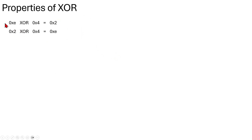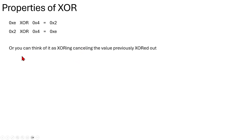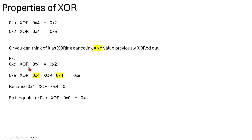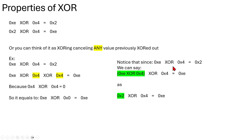To review the properties of XOR: 0xe XOR 0x4 equals 0x2, and 0x2 XOR 0x4 equals 0xe. You can think of XOR as canceling a previously XOR'd value. For example, 0xe XOR 0x4 XOR 0x4 again equals 0xe, because 0x4 XOR 0x4 equals 0x0, so the whole expression becomes 0xe XOR 0x0 which is 0xe itself. Since 0xe XOR 0x4 equals 0x2, we can substitute: 0x2 XOR 0x4 equals 0xe.